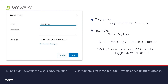Within the vSphere client, create a tag using the name of the VPG that will be used for VMs with this tag. Tags should be in the Zerto Protection Automation category that is automatically created during a Zerto for VMware installation. Multiple templates can exist, and thus multiple vSphere tags, to ensure VMs can be auto-protected with the exact configuration needed.